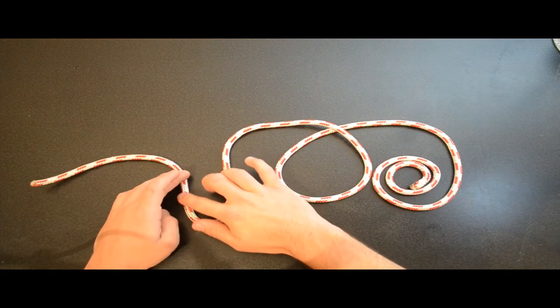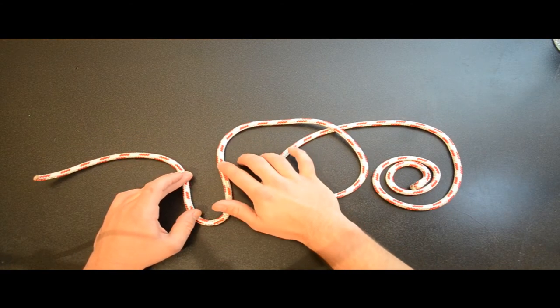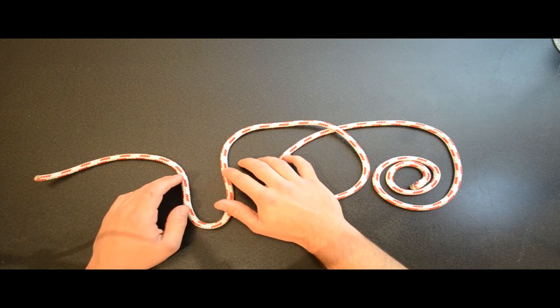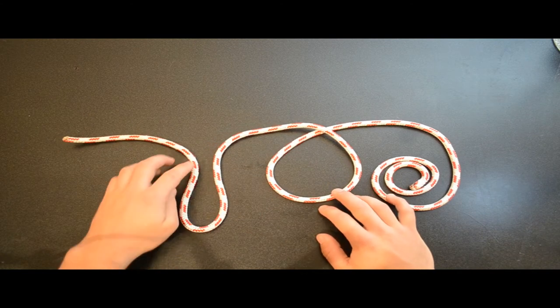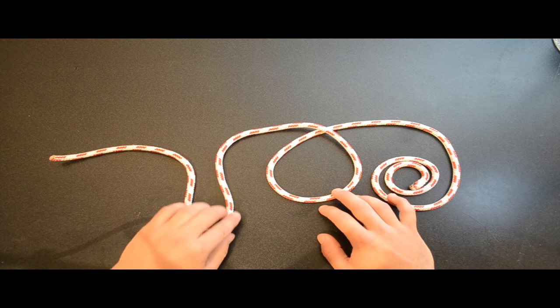This is known as the bite, spelled B-I-G-H-T. It is seen as a semicircle.